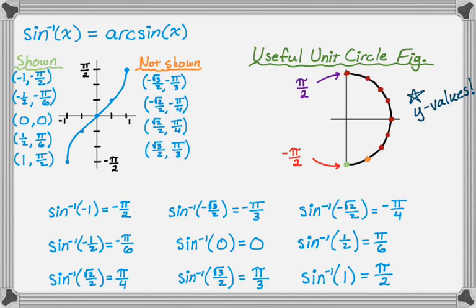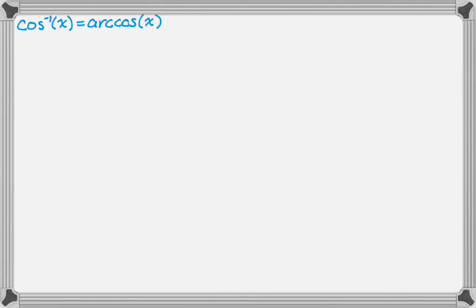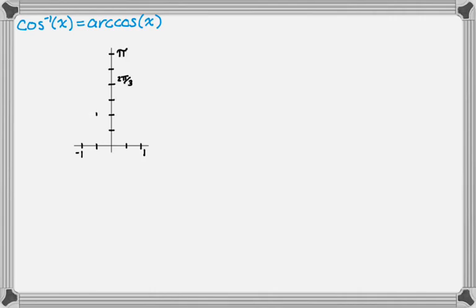Now let's look at arc cosine, or inverse cosine. You want to know the actual graph. The x-axis has the same division — negative 1 to 1, highlighting negative 1 half and positive 1 half. The y-axis is a little different: count by pi over 6s, but only label the pi over 3s because that's where the x-coordinates are going to be rational. So at the very top is pi, and you reduce the labels to the pi over 3s.